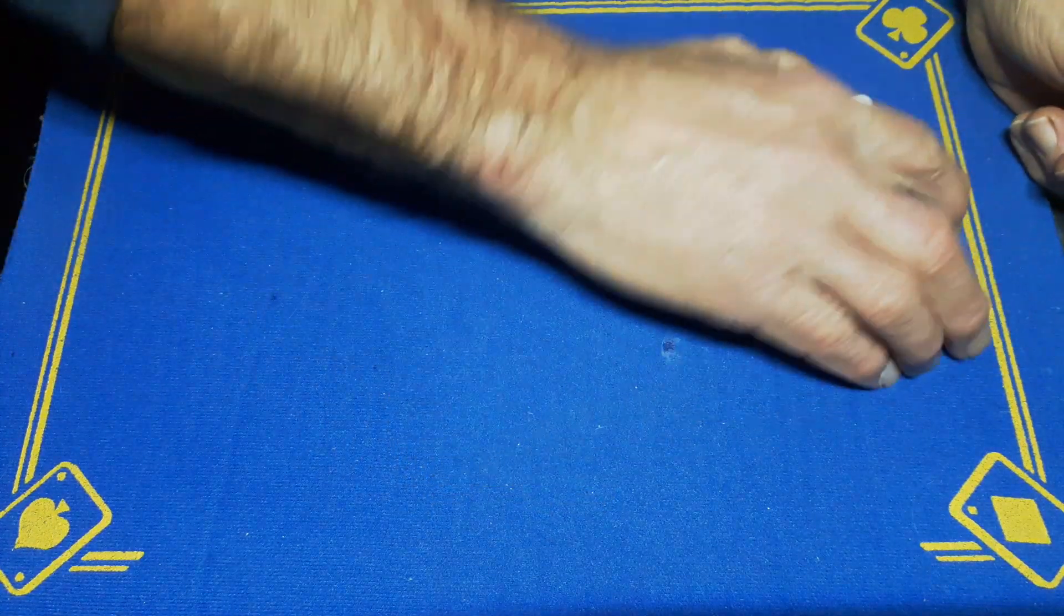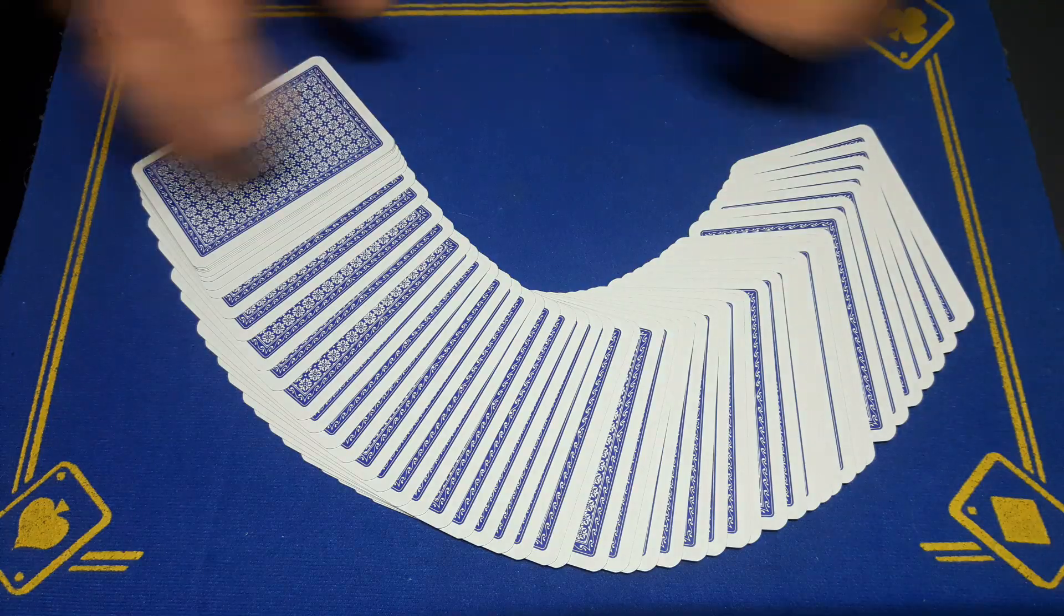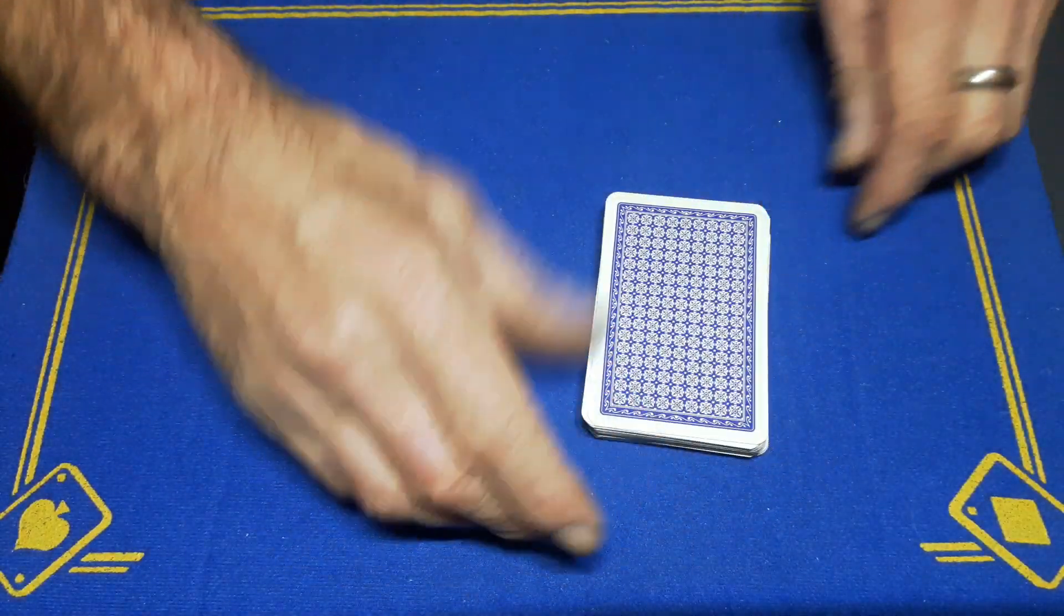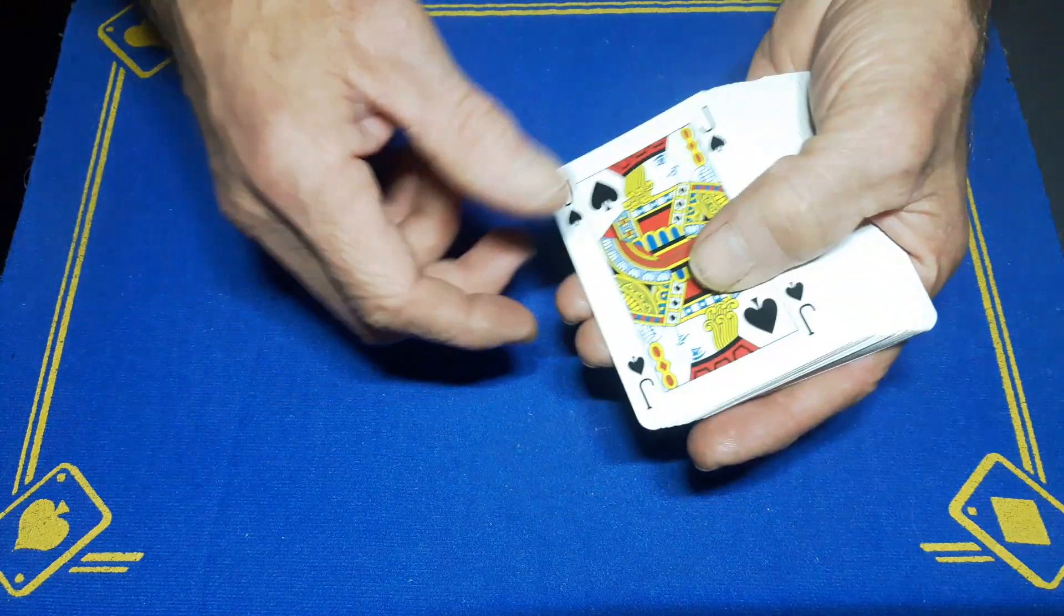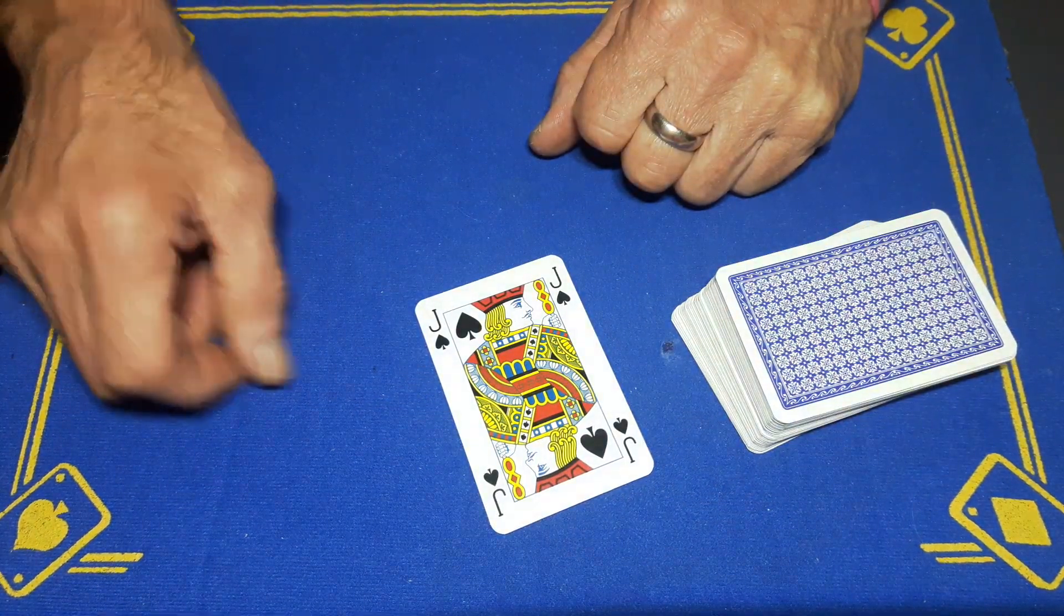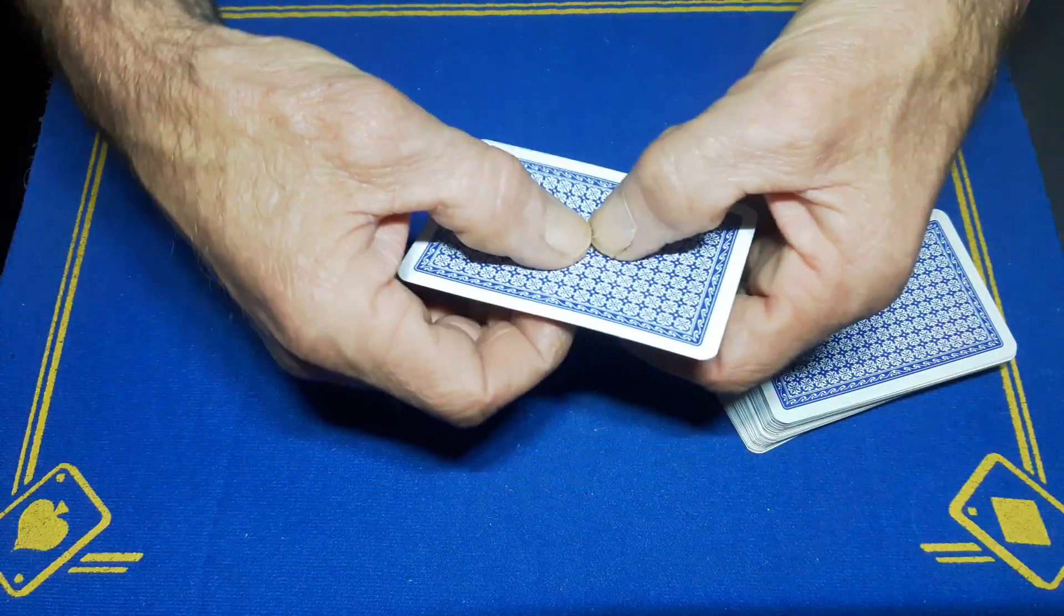All right guys, Gaff is back with the explanation to the last card trick. If this doesn't fool you, nothing will. Very simple, bit of a stack and a gimmick card - the Jack of Spades crimped from the face down.